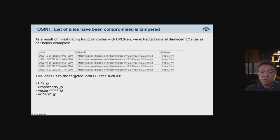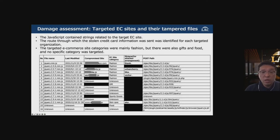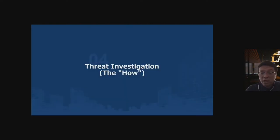Through OSINT research using URL scan, we found several damaged EC sites. Some of the investigated compromised EC sites are listed in the slide. We identified cases using the following method to detect compromised EC sites: the JavaScript contains strings related to the targeted EC site, and the route where stolen data was sent was confirmed coming from the targeted victim's e-commerce site. Each path was provided for each victim. The targeted e-commerce site categories were mainly fashion, as fashion sites are popular, but also gift and food — no specific category was exclusively targeted.